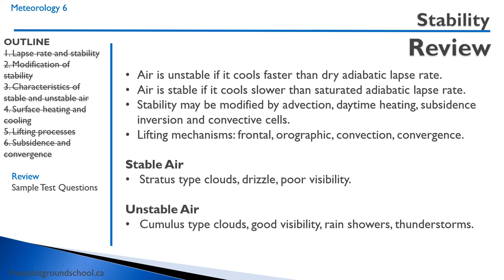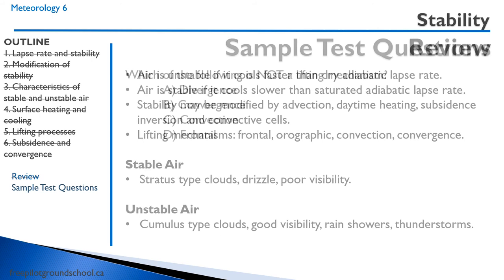Stable air is characterized by stratus-type clouds, drizzle, mist, fog, and poor visibility. Unstable air is characterized by cumulus-type clouds, good visibility, rain showers, and thunderstorms.